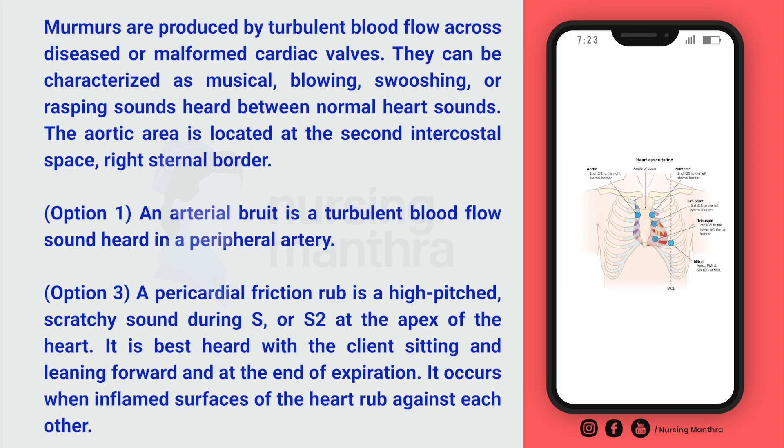Murmurs can be characterized by a musical, blowing, swooshing, or rasping sound heard between the normal heart sounds. The aortic area is located at the second intercostal space, right sternal border.